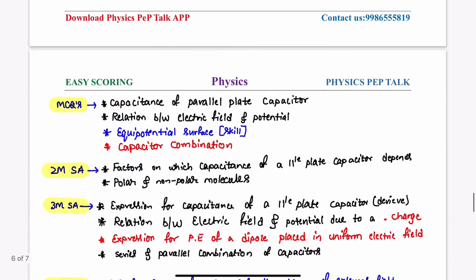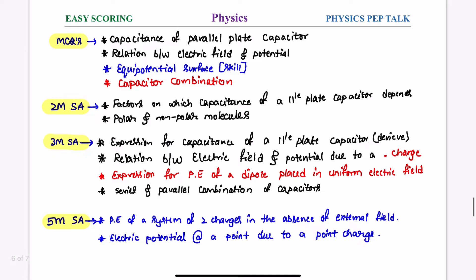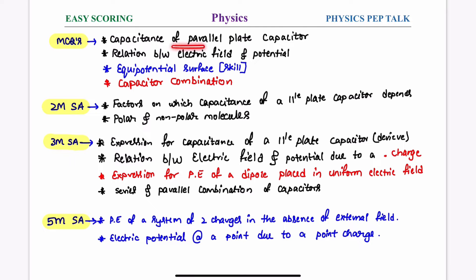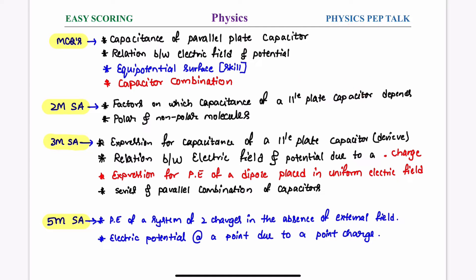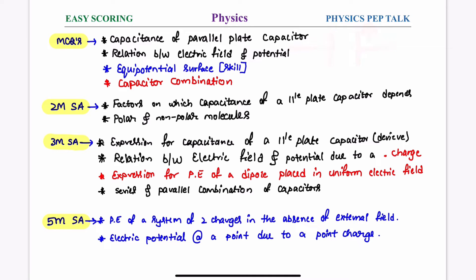For MCQs, most probable questions: you can be asked about the capacitance of a parallel-plated capacitor directly. The capacitance of a parallel-plated capacitor depends on certain factors, and questions on what causes capacitance to increase are likely MCQ topics.